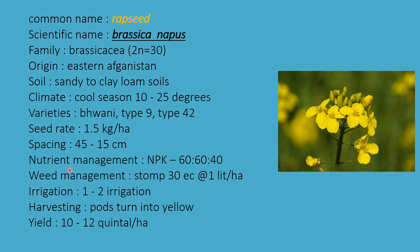Nutrient management is NPK 60:60:40; phosphorus and potassium are applied in basal doses. Weed management uses STOMP 30 EC at 1 liter per hectare. Irrigation: 1 to 2 times for the entire crop. Harvesting when parts turn yellowish; yield is 10 to 12 quintals per hectare.